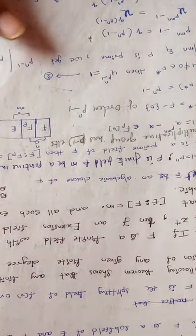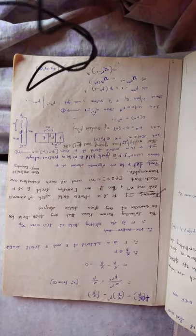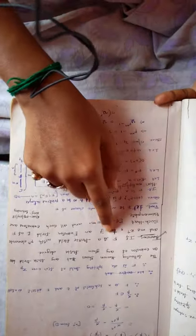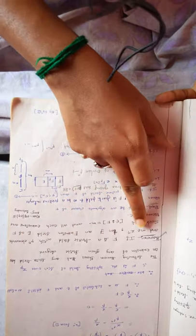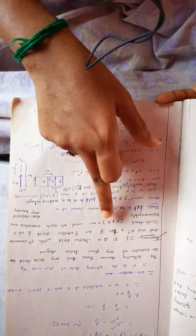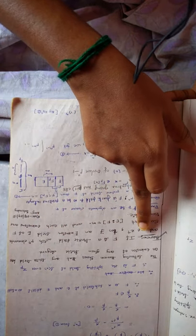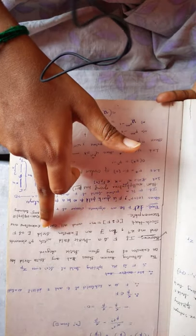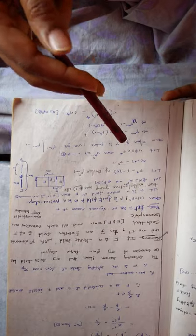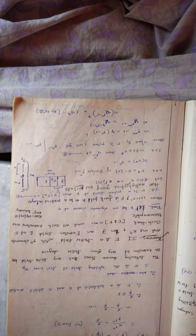We are proving the theorem related to Galois theory. The given: if F is a finite field with p^n elements and m belongs to Z+, that is, F is a finite field consisting of p^n elements and m is a positive integer, then there exists an extension field E of F such that the dimension of E over F equals m.